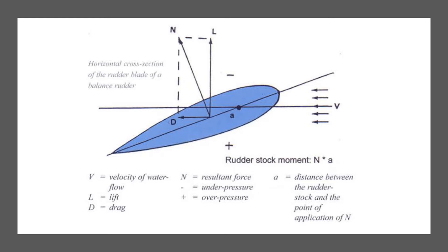The force that the steering engine must supply depends on the torque that must be applied to rotate the rudder. The torque is equal to force by distance — this force is the resultant N shown in the diagram. The total moment depends on the position of the rudder stock compared to the point of application of force N, and the distance between the rudder stock and the leading edge of the rudder. When the rudder is free hanging, such as a spade rudder, the rudder stock must also be able to absorb the total bending forces.